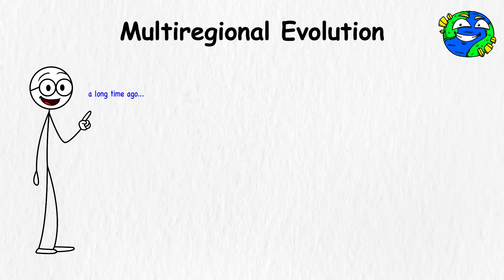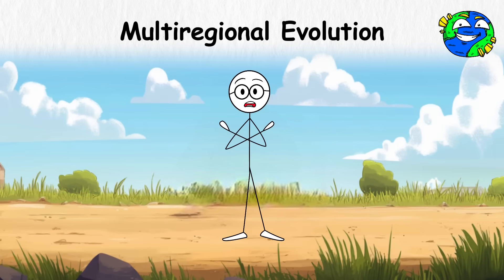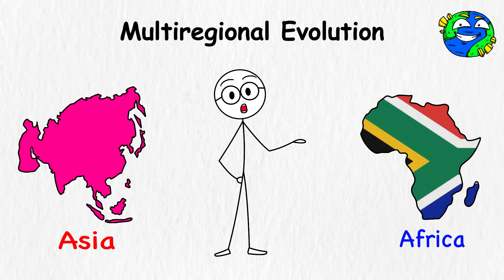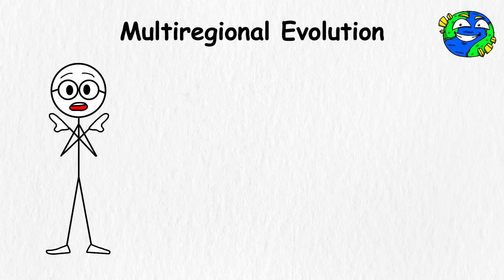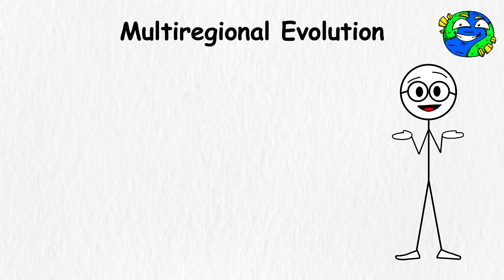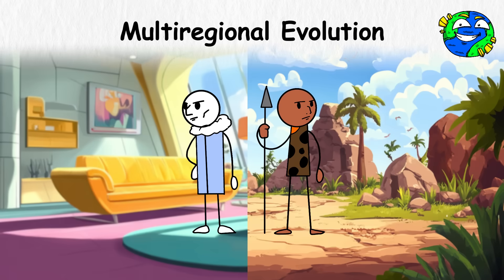Multiregional Evolution. A long time ago, early humans began spreading out. Not just one group, not one path. People moved in different directions, across Africa, into Asia, and across parts of Europe. They didn't start out as modern humans, but over time, they changed. Each group faced different problems. Different weather, food, and different land. That shaped how they looked and lived.